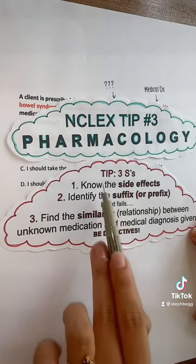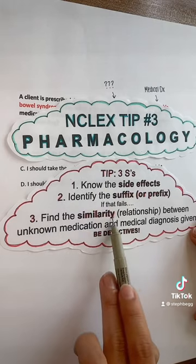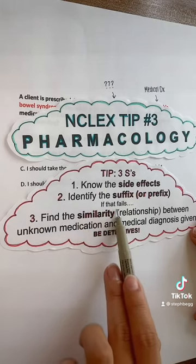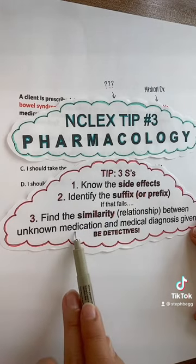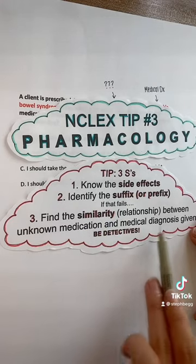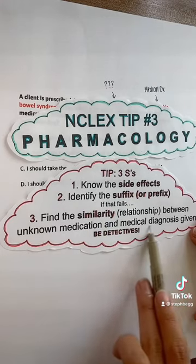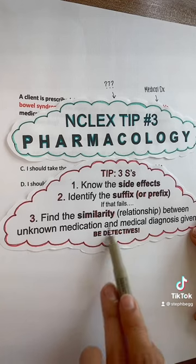Now, when the first two still leave you stuck, try to use the similarity method by finding the relationship between the medication and the diagnosis given. This has saved me so many times, so let's look at a question.